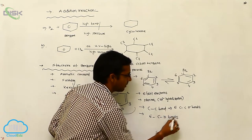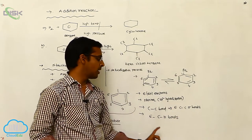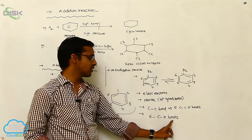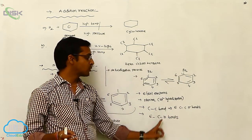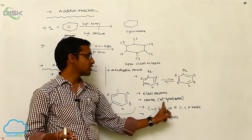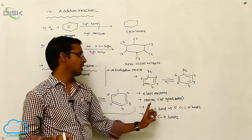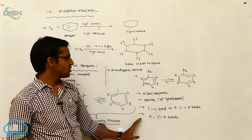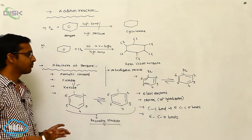Six C–C sigma bonds are formed through sp2 hybridization. This describes the resonating structure of benzene.